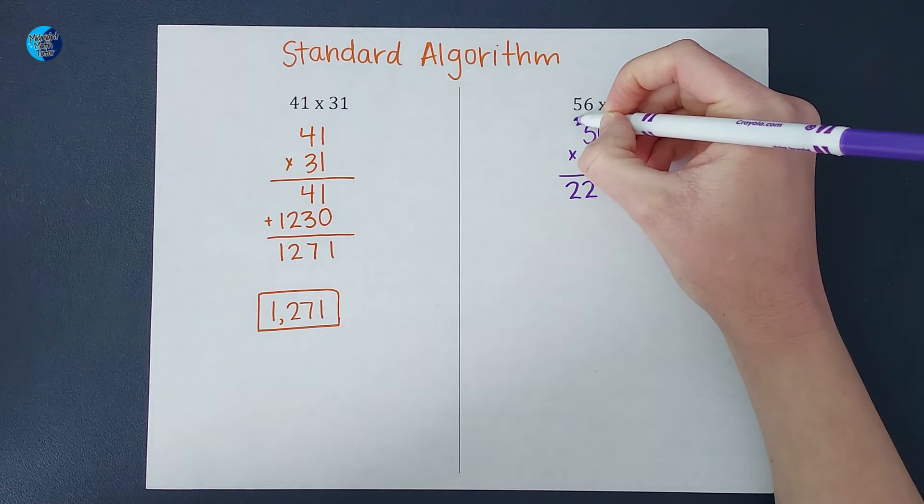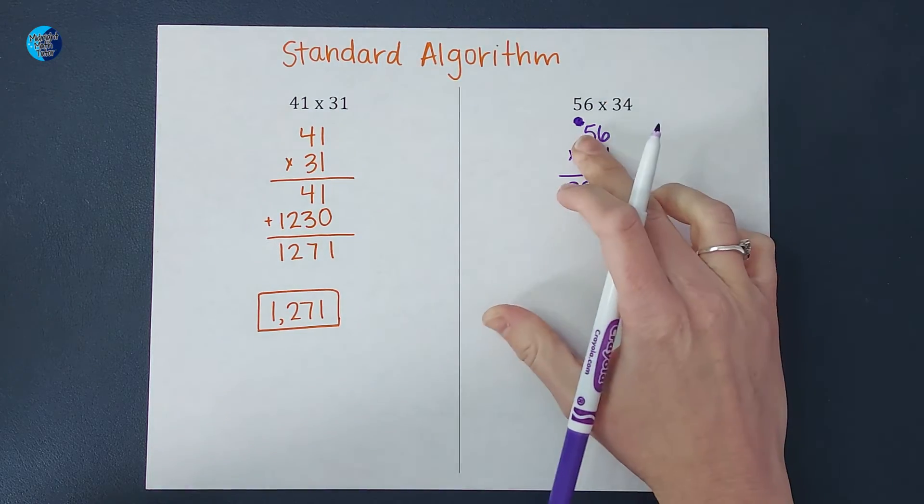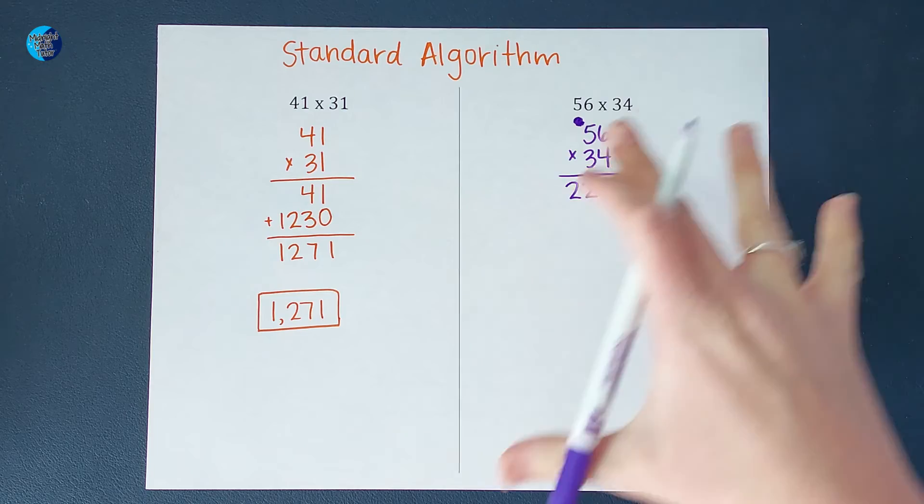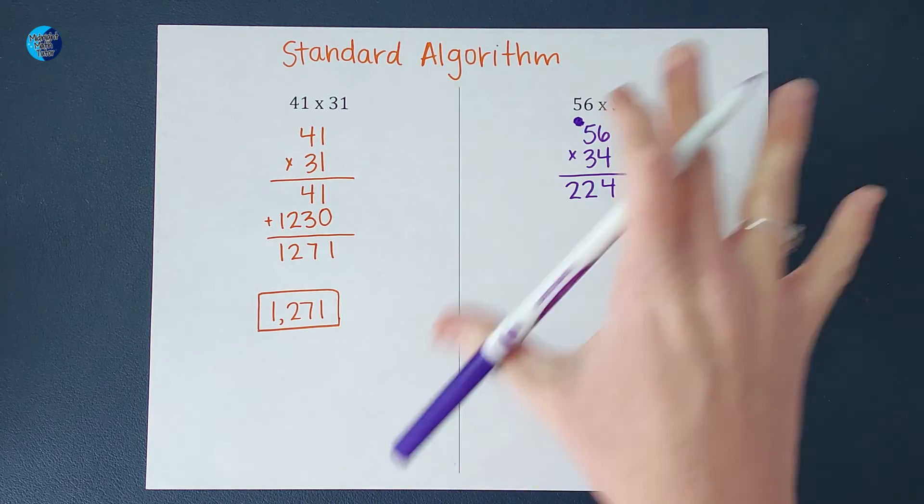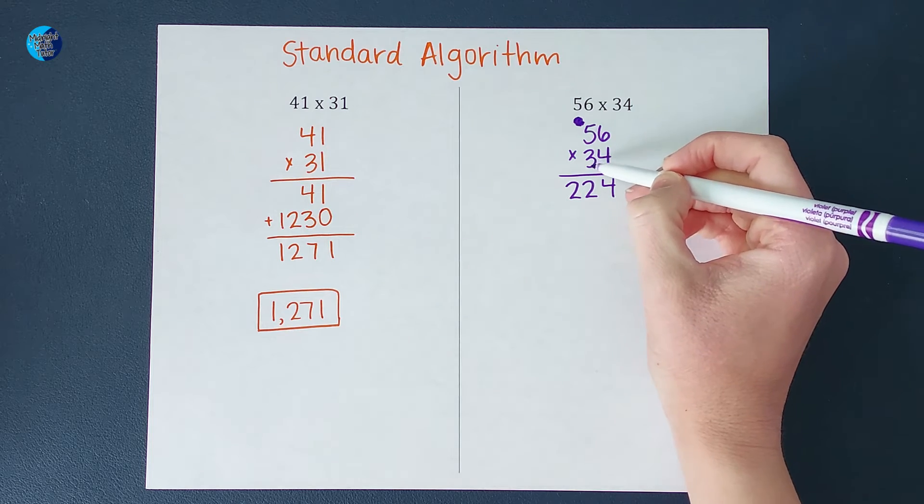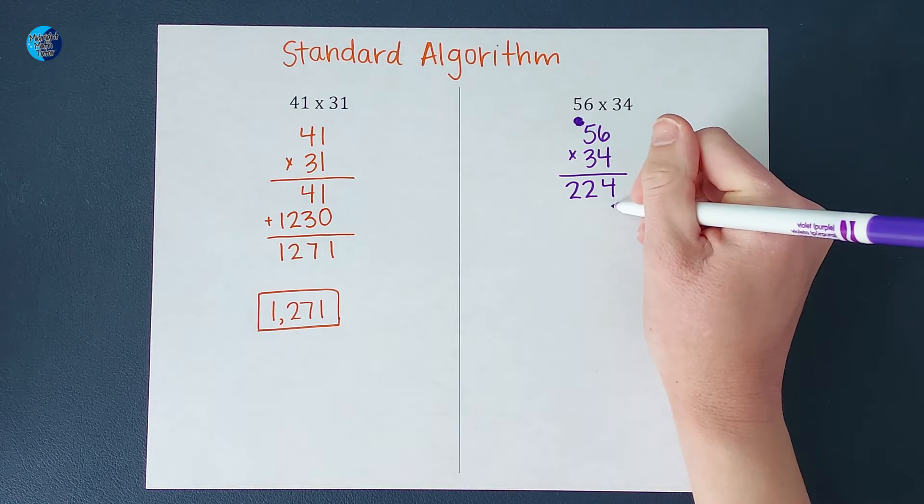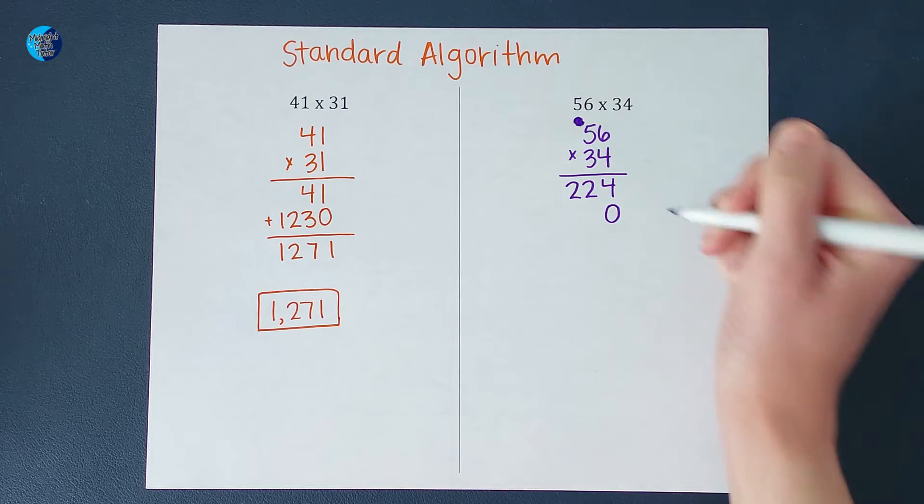Then I kind of like to scribble this guy out. Or if I were writing in pencil, erase it. Because we used that one. And we don't want it to interfere with our next multiplying. Okay. Now, again, I'm not actually multiplying by 3. It's actually a 30. So to account for that, I put a 0 here.